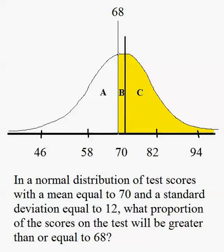So we have A, B, and C. Let's take a look at what each of those areas represents. As mentioned, C is half the distribution. So let's put that into our problem. We know that at least half of the distribution is included with the people who have a test score of 68 or more, because half the population is at 70 or above, 70 being the mean.